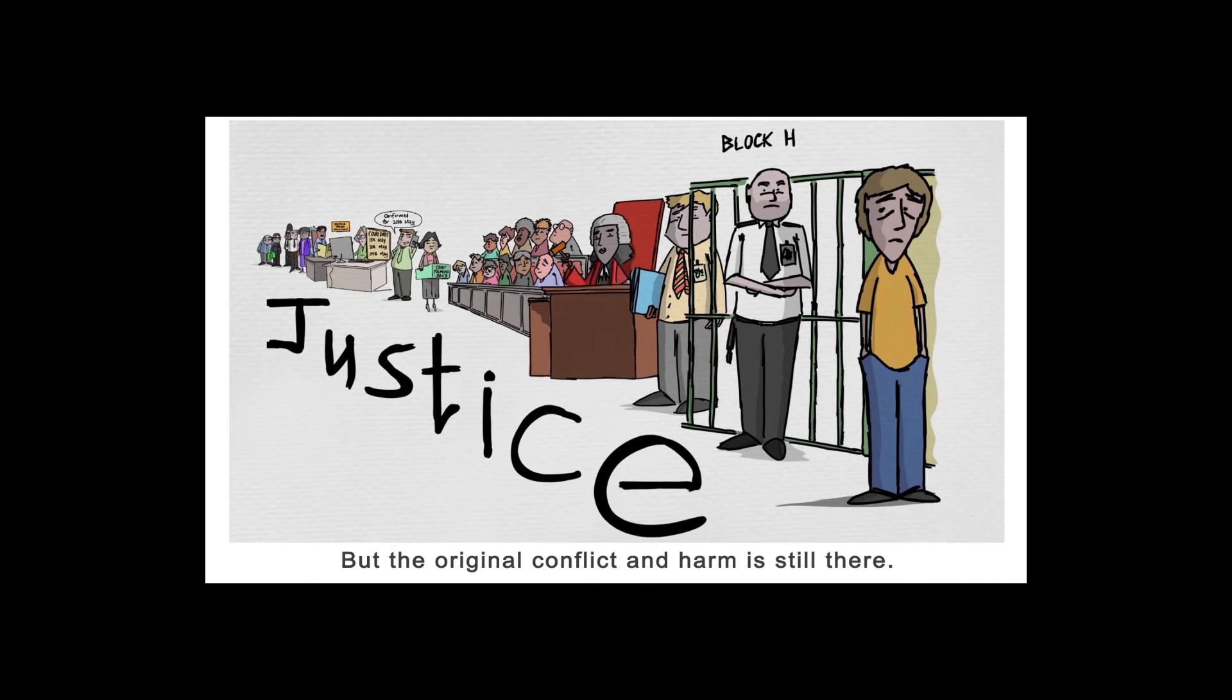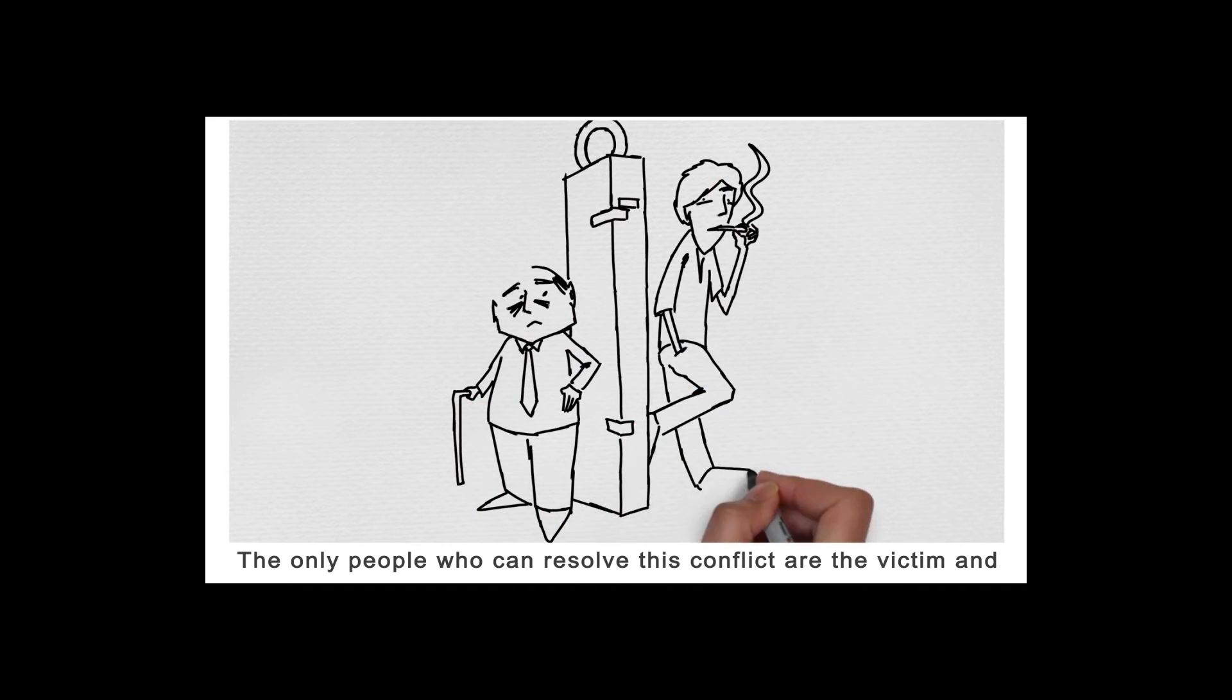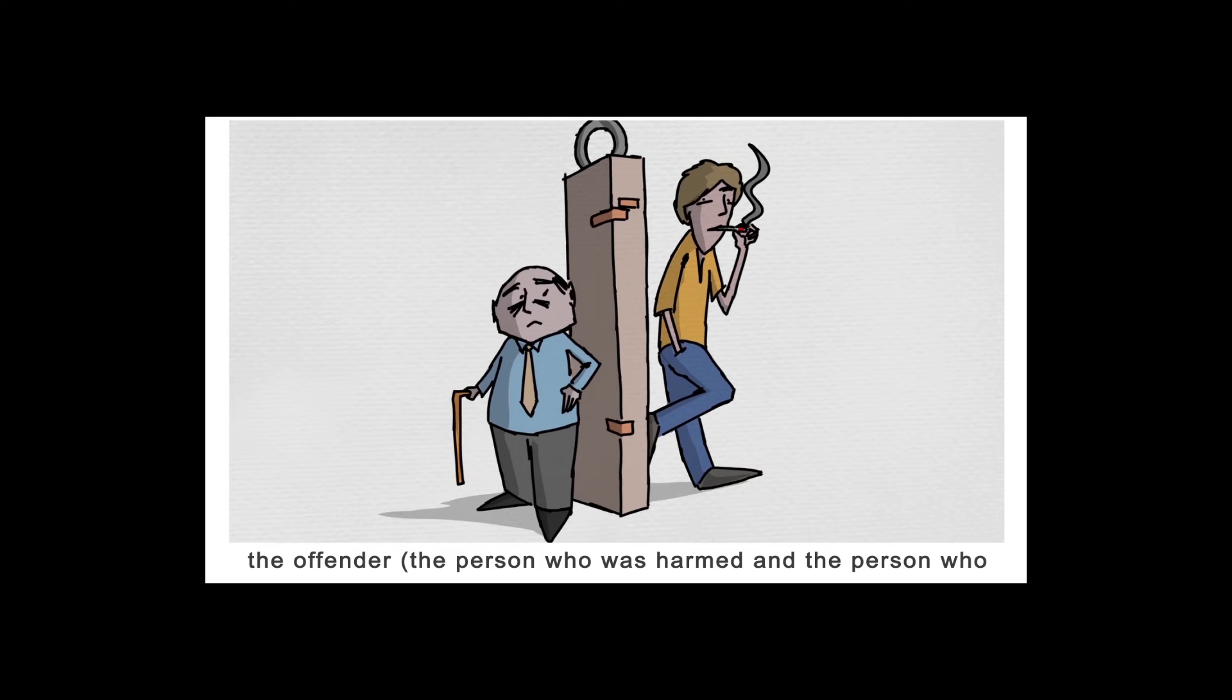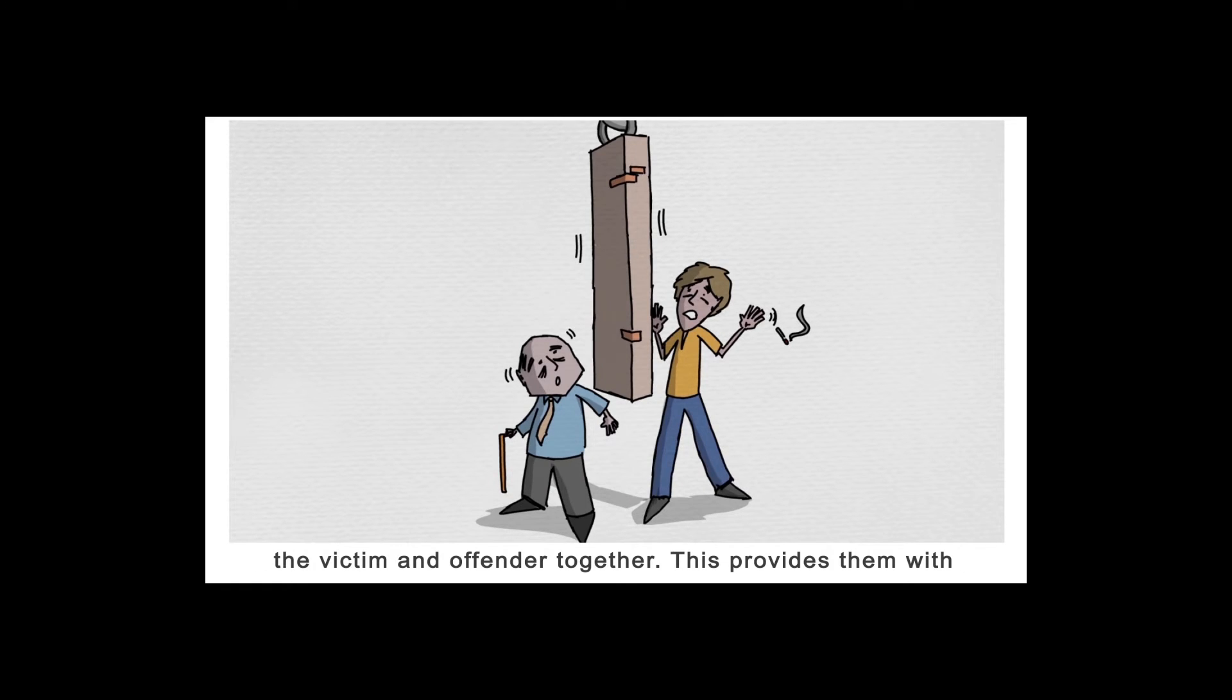But the original conflict and harm is still there. The only people who can resolve this conflict are the victim and the offender, the person who was harmed and the person who caused the harm. With the restorative justice approach, the focus is on bringing the victim and the offender together. This provides them with the opportunity to communicate with each other directly, or indirectly, often for the first time since the original conflict or harm.